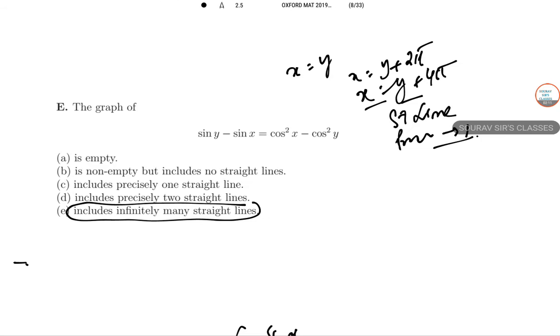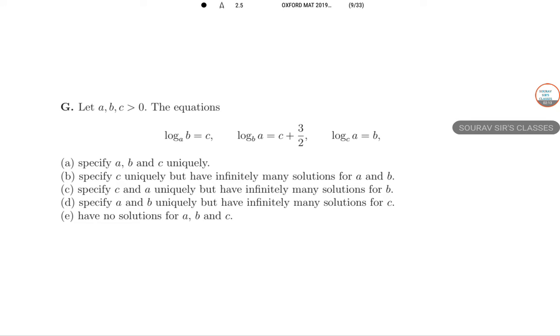After F, let's go to G. There are three equations given. You need to specify a, b, c uniquely, whether they are associated with each other or not. So let me draw the diagram here.